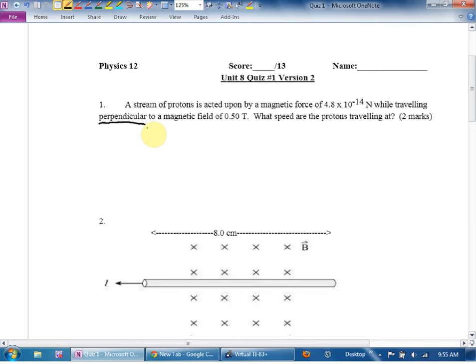What speed are the protons traveling at? So we said the force, the magnetic force on a charge is qvB. I'll give you a half mark for writing that. That means that the speed is equal to the force divided by qb, v equals F divided by qB.